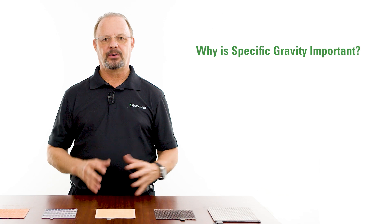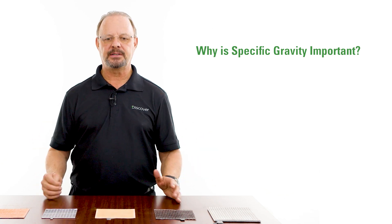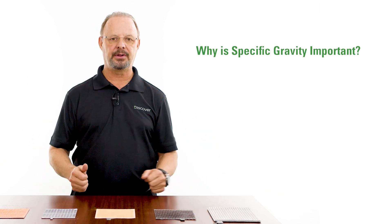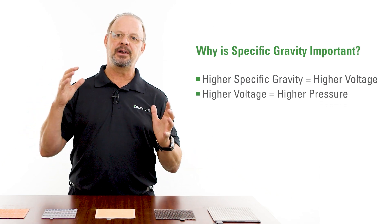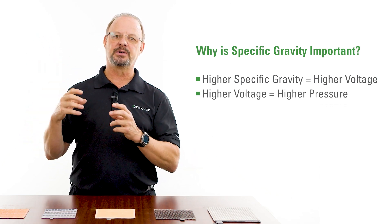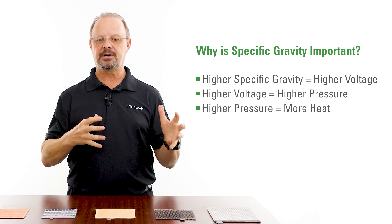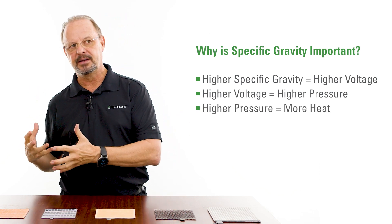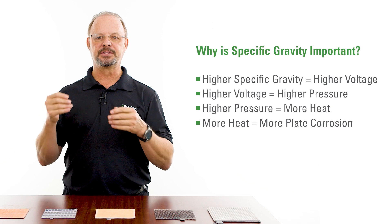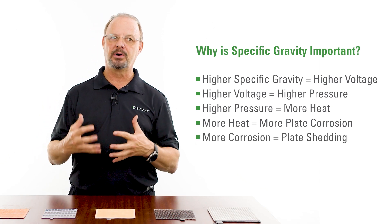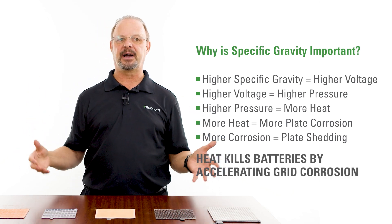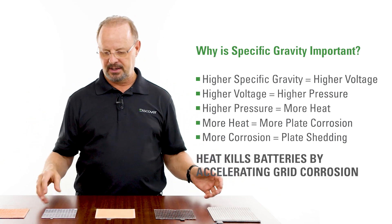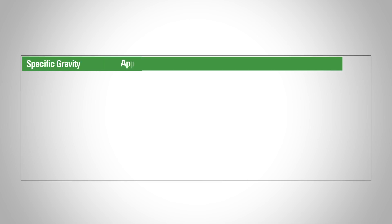So why is specific gravity important? Higher specific gravity leads to higher voltage. Higher voltage equals higher pressure. Higher pressure equals more heat. More heat equals more plate corrosion, and more corrosion equals plate shedding. Essentially, heat kills batteries by accelerating grid corrosion.